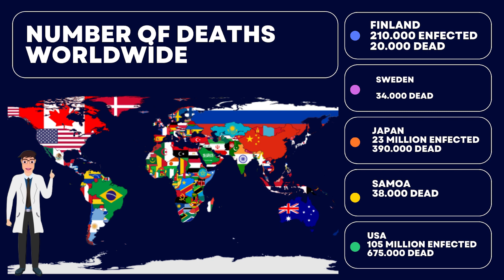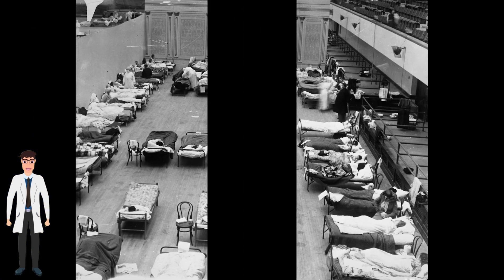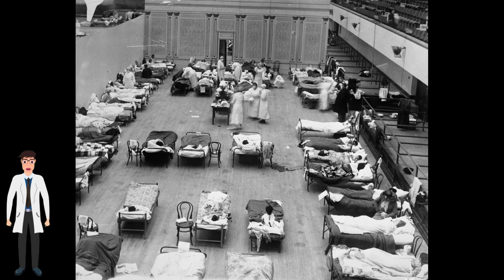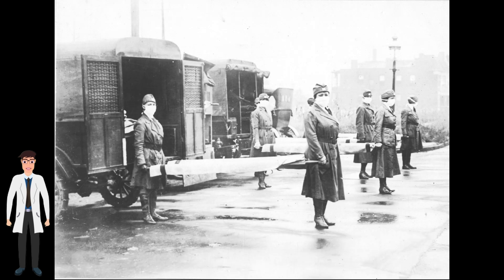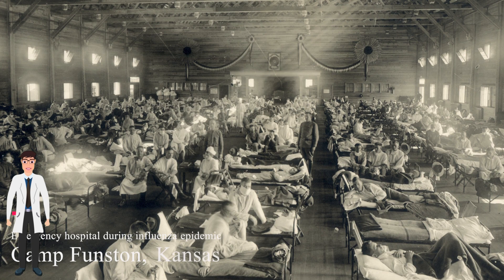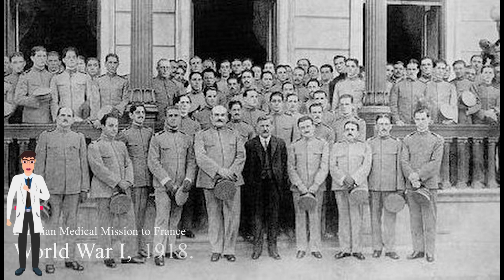Approximately 23 million people were infected and 390,000 people died in Japan. About 38,000 people in Samoa died — roughly a quarter of the population — in just two months in 1918. During the peak of the pandemic in the United States, approximately one-third of the population, around 105 million people, were infected.